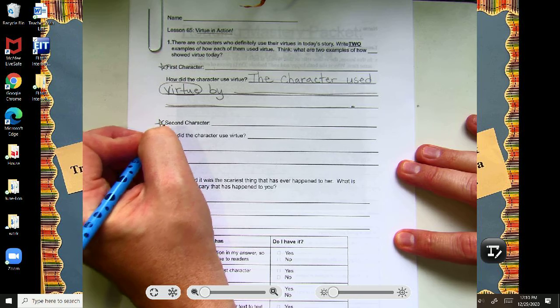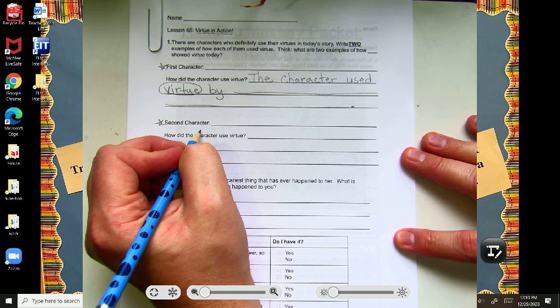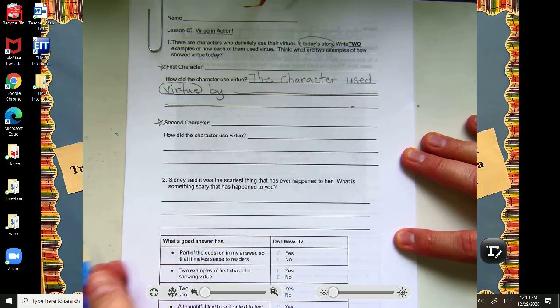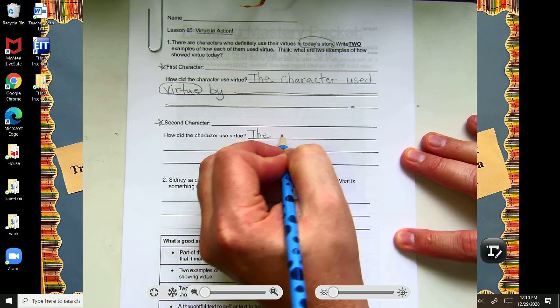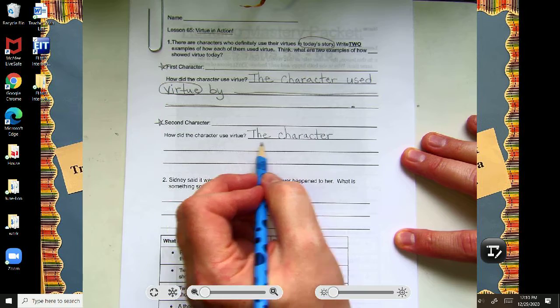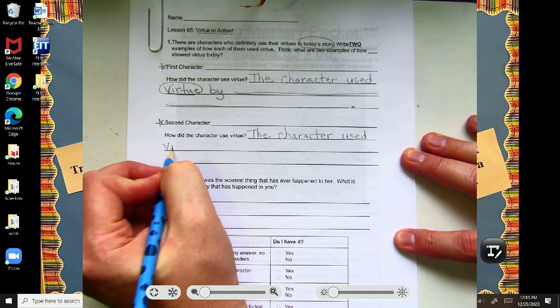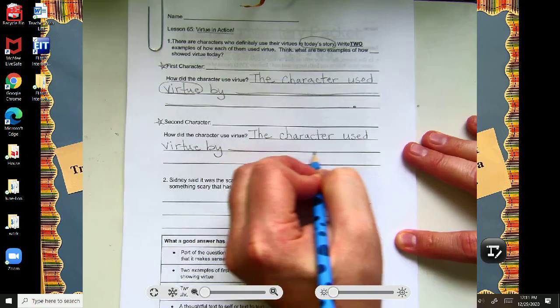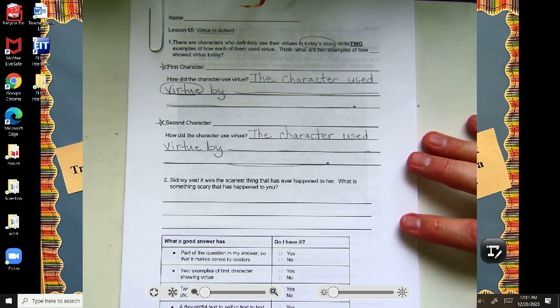Then a second character. So think of another character from today's reading. And how did the character use virtue in today's story? So think of the character. And then again, we could start this in much the same way, right?